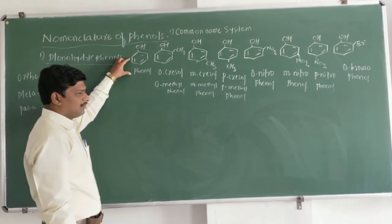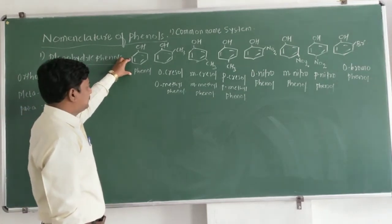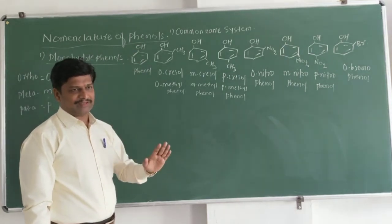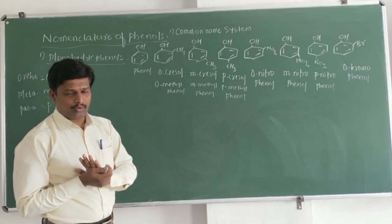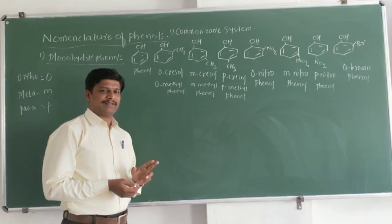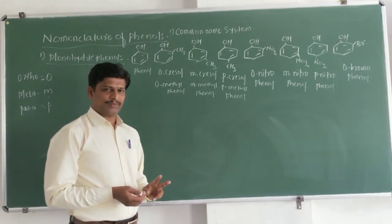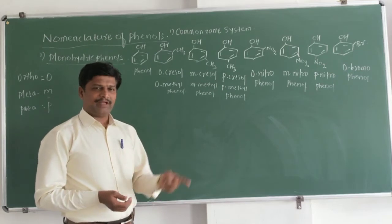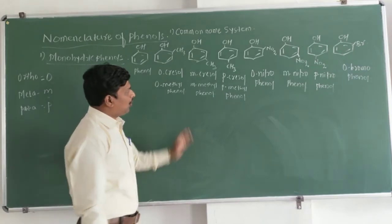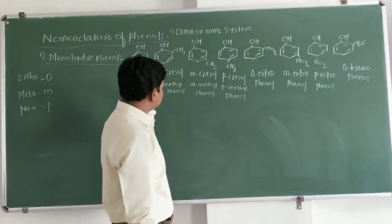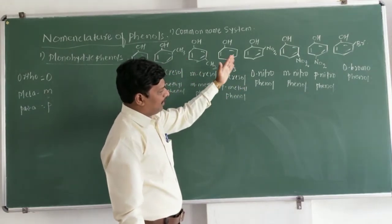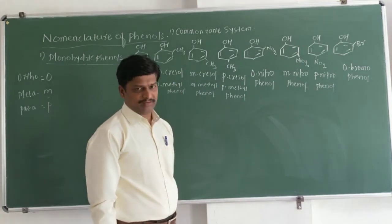For example, if there is only one substituent on the benzene ring, there is no ortho, meta, or para prefix used. So all these structures I've shown contain two substituents — therefore the ortho, meta, and para prefixes are applicable to all these structures.